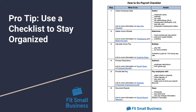We're going to have this checklist available for download in the description below so you have access to it and can use it to stay organized throughout the payroll process. It's not something you have to do, but it can be a really helpful way to make sure nothing is being missed. Those are eight simple steps that you can follow that will keep you on track and make sure your payroll is accurate. If you have any questions, feel free to ask them below, and thanks for watching.